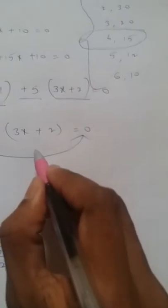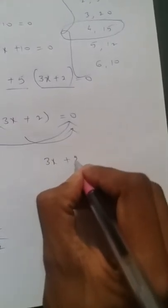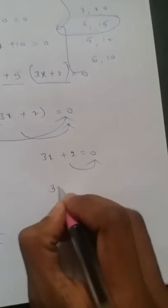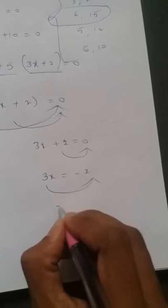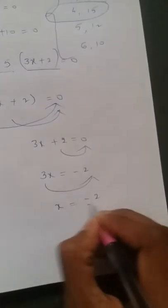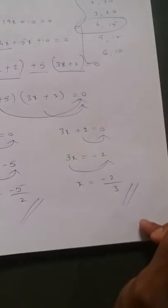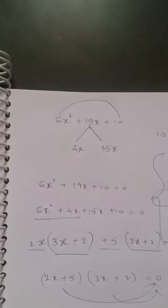Now the same way, take the second factor and make it equal to 0. 3x + 2 = 0. Take +2 to the right side, it will become -2. So take 3 also to that side, it will become division. So x = -2/3. -5/2 and -2/3 are the two zeros of the given equation or polynomial 6x² + 19x + 10 = 0.